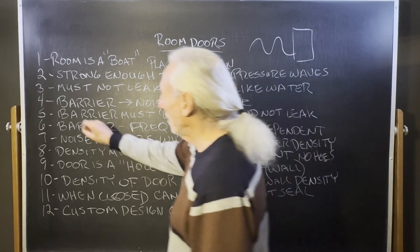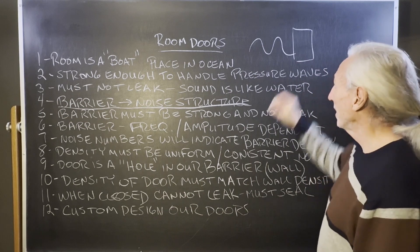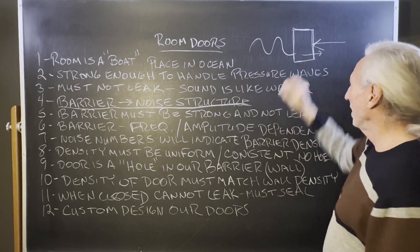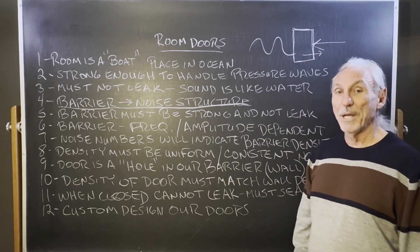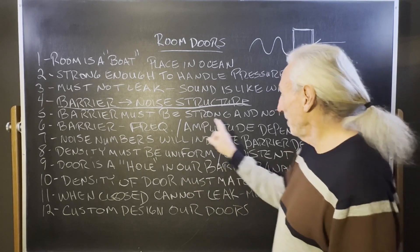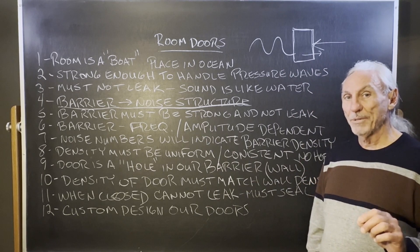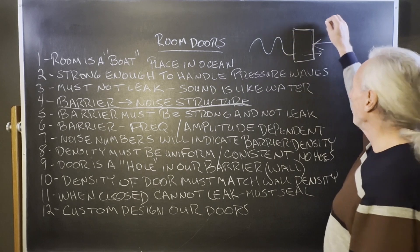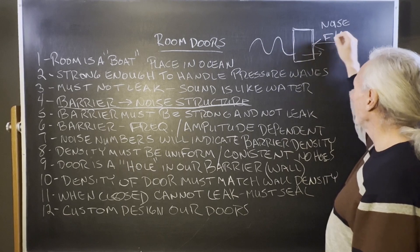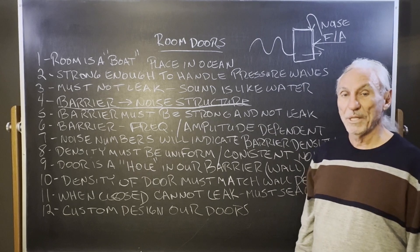A barrier is a noise structure — it's the fortress that we build to keep noise out, and hopefully not create too much noise inside, because it's a two-way valve. A barrier must be strong and not leak. The barrier is also frequency and amplitude dependent. That's why we have to measure the noise, because the noise will have different frequencies and amplitudes, and those directly impact the structure we build to stop that noise.